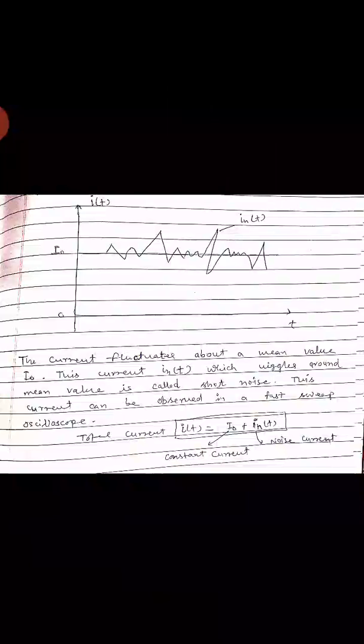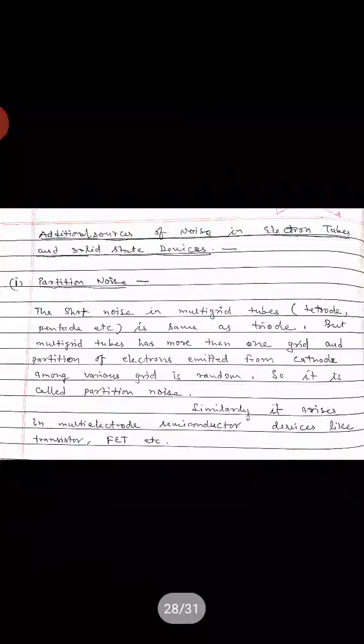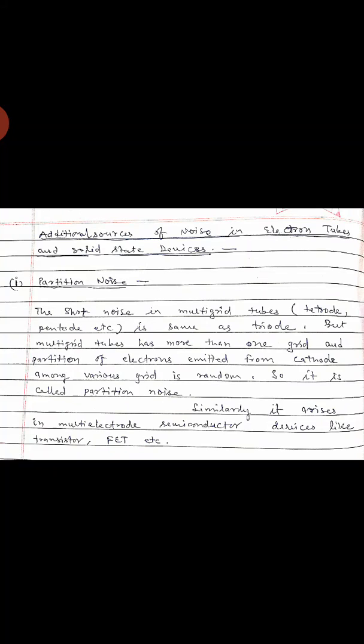Shot noise is further divided into sub-parts. Additional sources of noise in electron devices include partition noise and flicker noise. Partition noise, as the name suggests, is the partitioning of shot noise in multi-grid tubes. A multi-grid tube has more than one grid, and the partition of electrons emitted from the cathode among the various grids is random. It similarly arises in multi-electrode semiconductor devices like transistors and FETs, which also have multiple terminals.